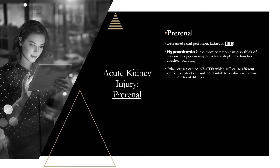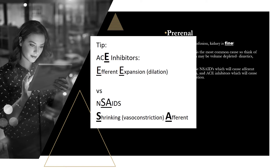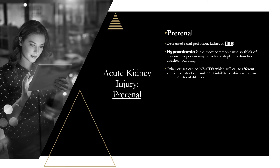ACE inhibitors cause efferent arteriole dilation. A helpful mnemonic: NSAIDs does not have an 'E' in it, whereas ACE inhibitors does. So with ACE inhibitors, think 'efferent expansion or dilation.' With NSAIDs, take the S and A and think 'shrinking or vasoconstriction of the afferent.' That's a reliable way to remember which drug affects which vessel.